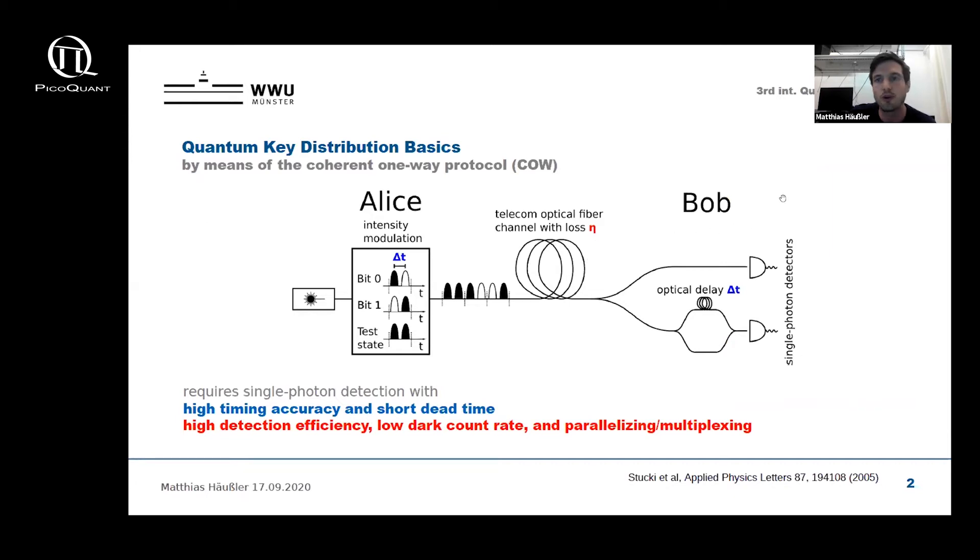In the coherent one-way protocol, as in all QKD protocols, Alice and Bob want to create a secret key that can be used to securely exchange information. To this end, in the first step Alice the sender creates bits zeros and ones, where zero corresponds to a photon early in a time interval and one corresponds to a photon late in the time interval. In addition, Alice can also create test states with an early and a late photon separated by a time delta t.